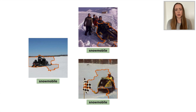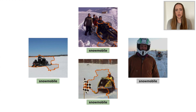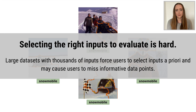But what if you were to sample again and get this image? Now you might not feel quite as confident. It's correctly classified, but its explanation highlights the helmet as opposed to the snowmobile. While helmets and snowmobiles are definitely correlated, you would not want your model to have learned a rigid dependence between the two. The takeaway here is that selecting the right inputs to evaluate is hard. We have large datasets, so we can't evaluate everything, and depending on how we subsample, we could miss the most informative data points.